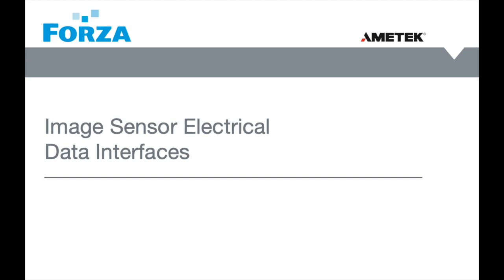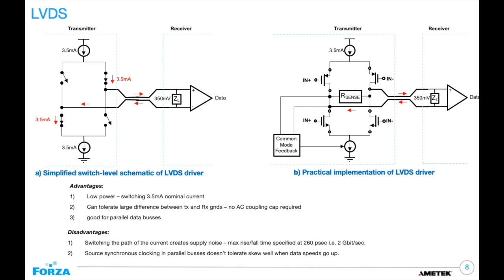This section goes over some of the electrical interfaces. The first interface we'll cover is LVDS. There are two schematic diagrams showing two implementations of an LVDS driver. Some pros: it's low power, can tolerate large differences between TX and RX grounds, no AC coupling cap is required, and it's good for parallel data buses. On our sensors with LVDS, it's going to be a parallel data bus with X number of differential data lane pairs tied to a synchronous clock.